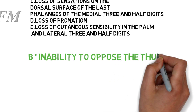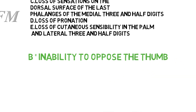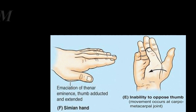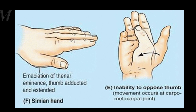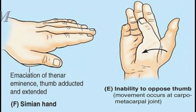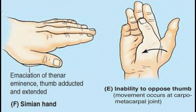The correct answer is option B — inability to oppose the thumb, because opponens pollicis is supplied by the median nerve. Drop wrist is due to injury to the radial nerve. Loss of sensation of the dorsal surface of the last phalanges of the medial digits does not occur with median nerve injury at the wrist, because the sensory supply is given off before the wrist joint. Loss of pronation is also not a feature of injury to the median nerve at the wrist.